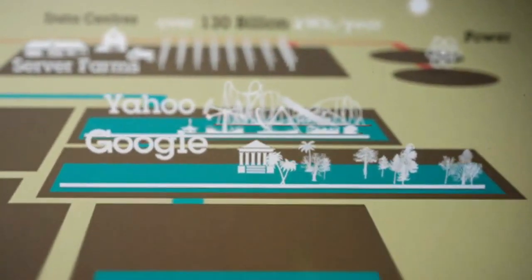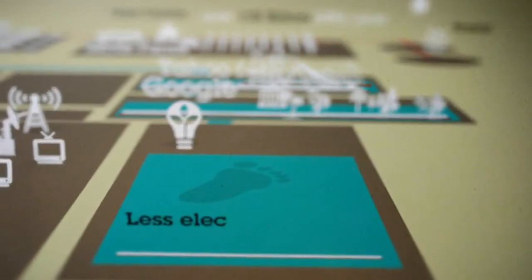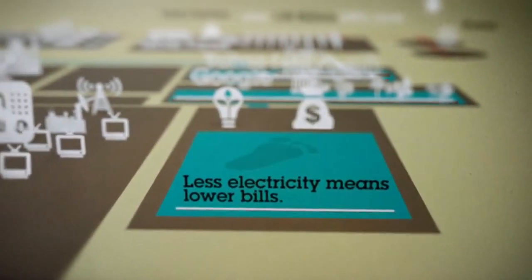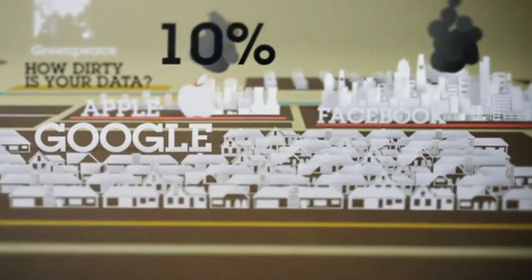The big tech companies are concerned about their carbon footprint. The less electricity they burn, the lower their bills. Google and Facebook take up around 10% each of the world's server space.